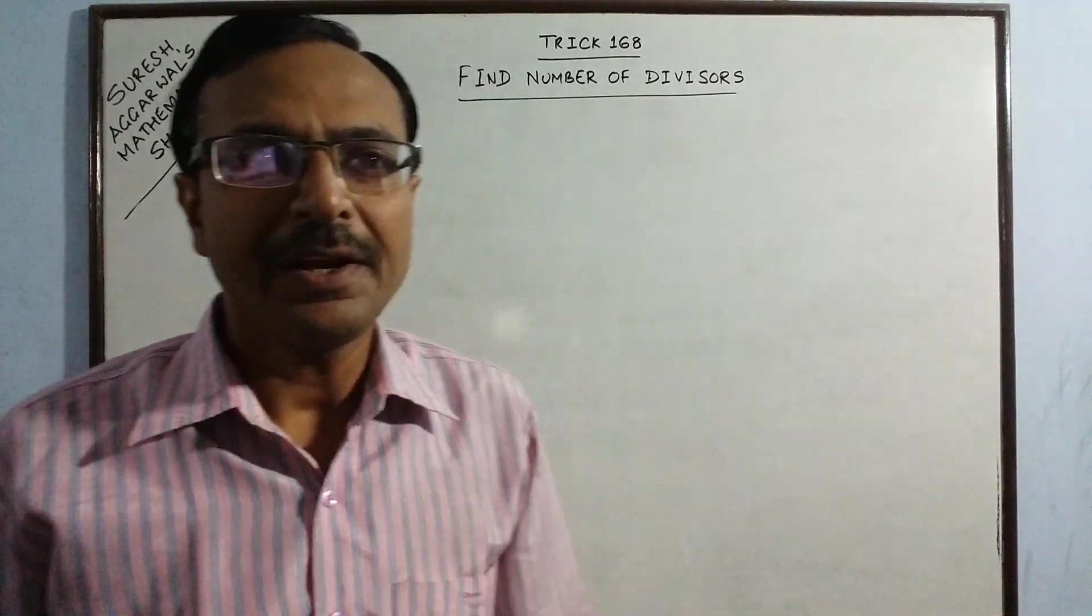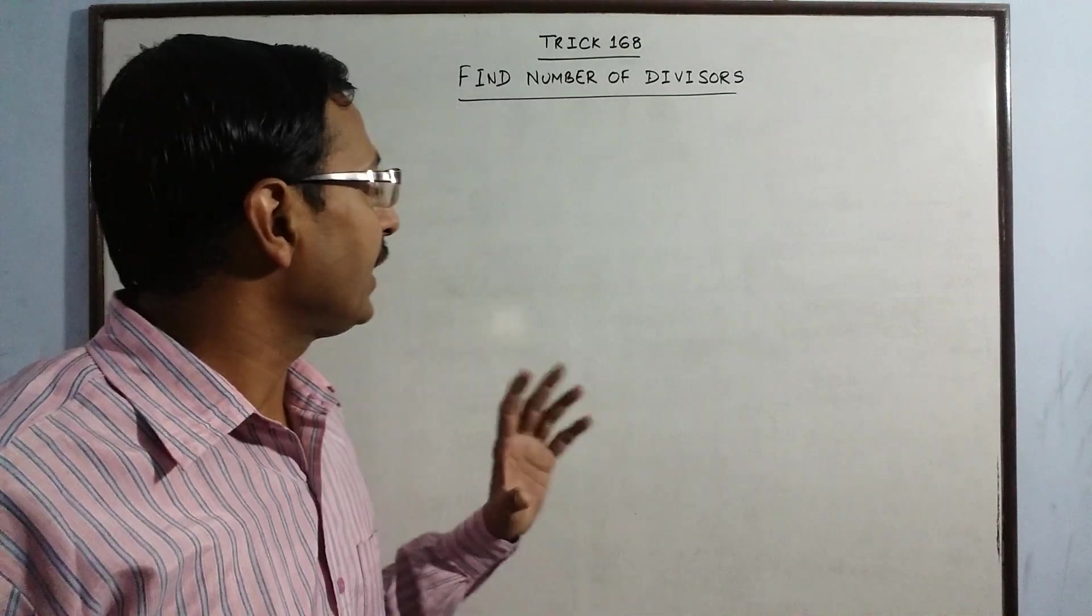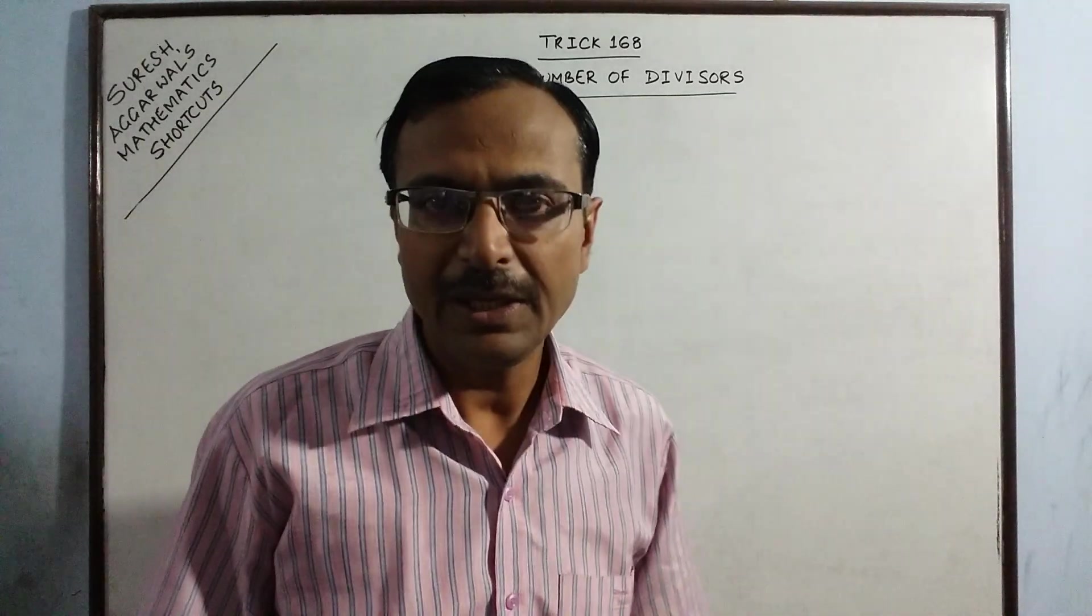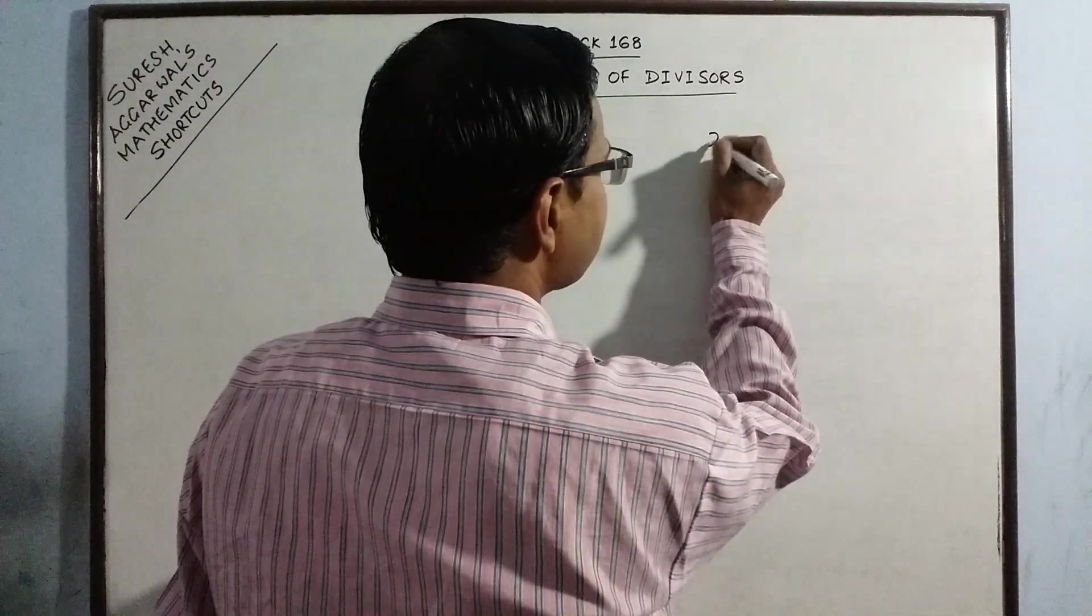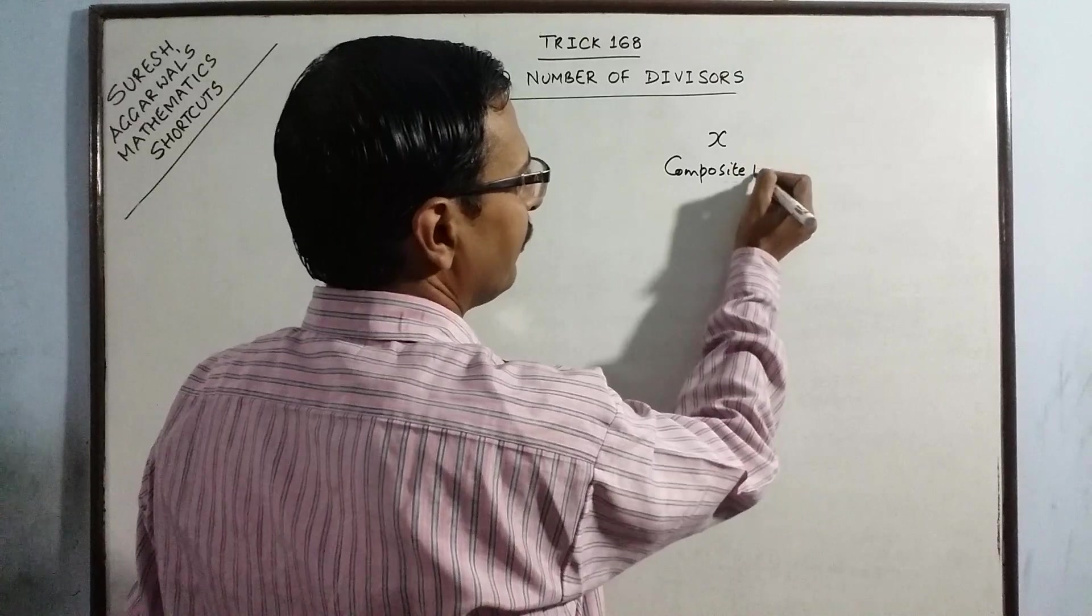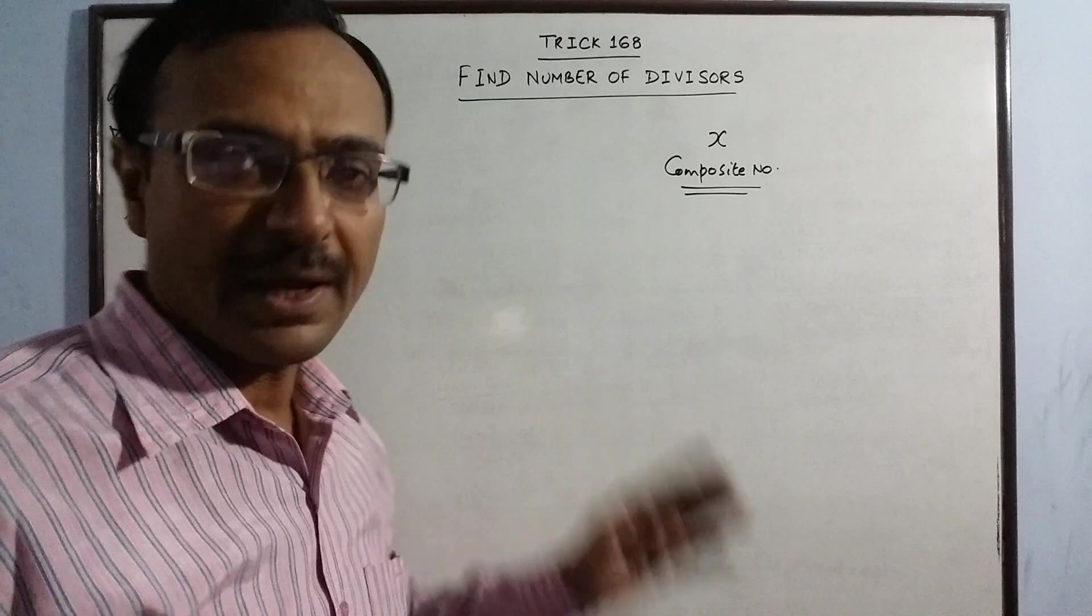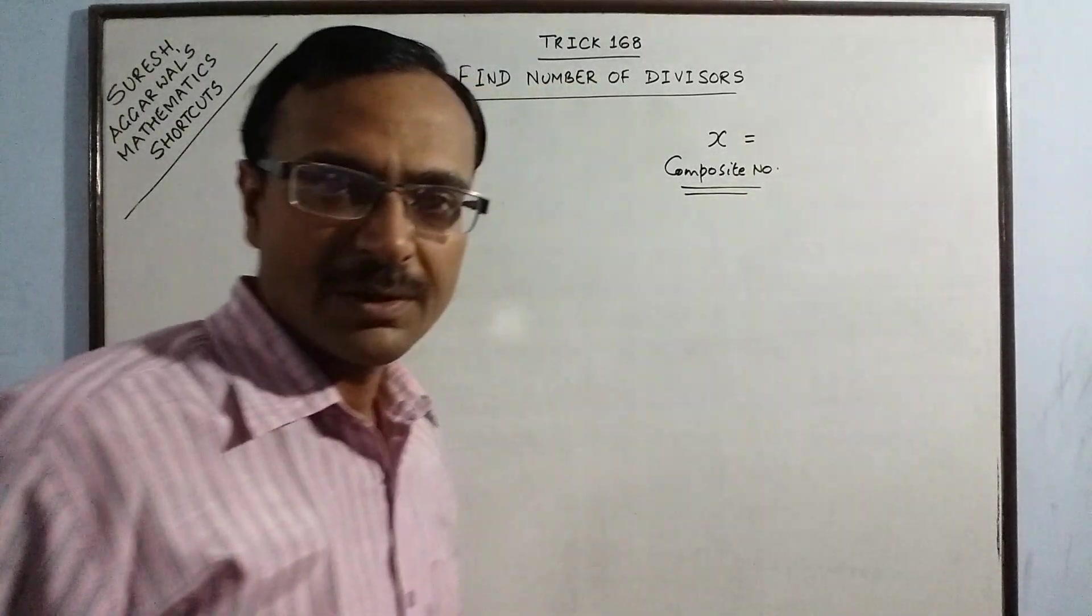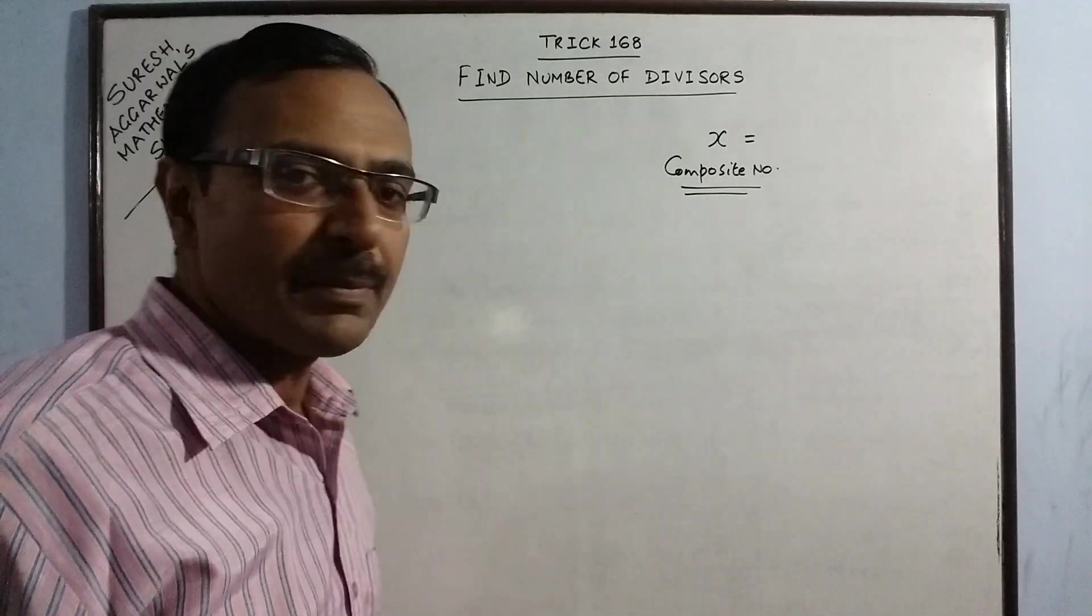Hello dear friends, in trick number 168, we are going to do an amazing shortcut for finding the number of divisors of any composite number. For example, suppose x is any composite number and we need to find how many divisors does x have.